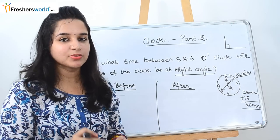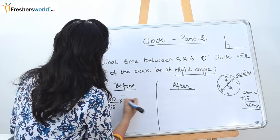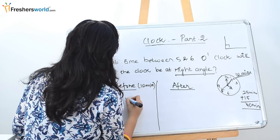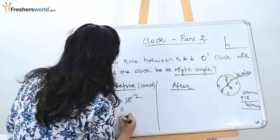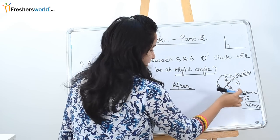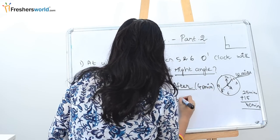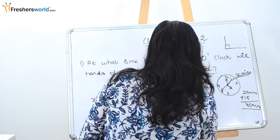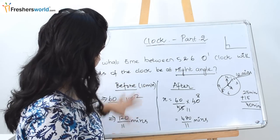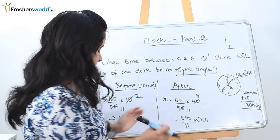Using the gain method from the previous problem: minutes equals (60/55) times the minute gain. For the first right angle, the gain is 10 minutes, giving (60/55) times 10 = 120/11 minutes. For the second right angle, after the hands coincide the minute hand goes 15 minutes ahead, making the gain 25 plus 15 equals 40 minutes, giving (60/55) times 40 = 480/11 minutes. So the two times are 120/11 and 480/11 minutes past 5 o'clock. Based on the options provided, you can choose either answer.